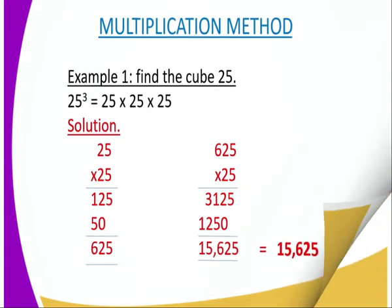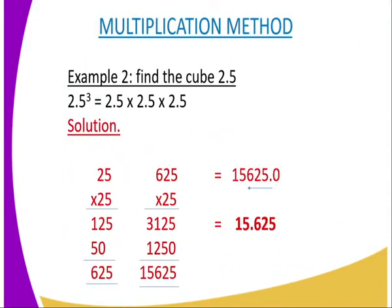Then from there, we will go to multiplication method if you are given a decimal point. What are you supposed to do? If a decimal point is given, you eliminate the decimals first, you work with 25 as we did in the first method. So you multiply 25 times 25, you get 625, then you further multiply 625 by 25, you get 15,625. Then you count the number of decimal places. You can see in this case, there are supposed to be three.